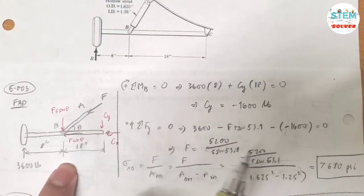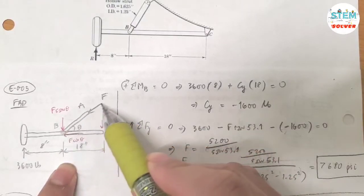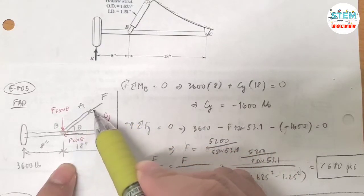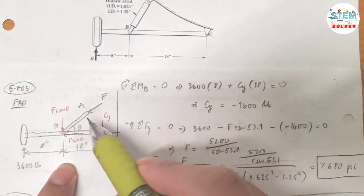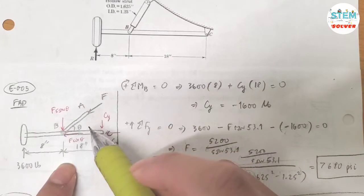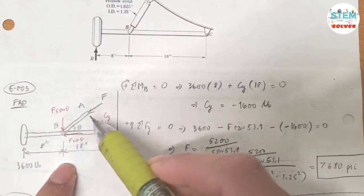So I have this free body diagram. I have the strut AB and the force acting on this strut. I assume that because this strut is compressive...